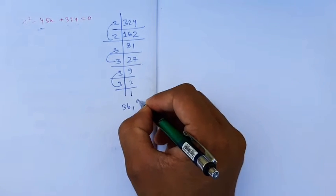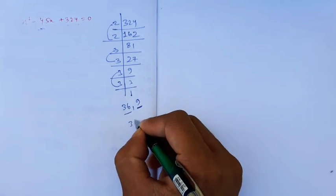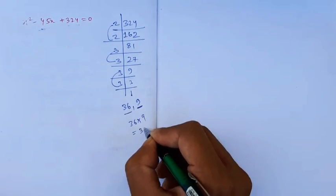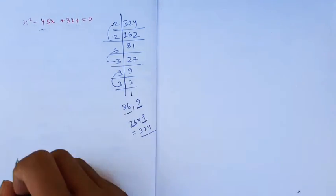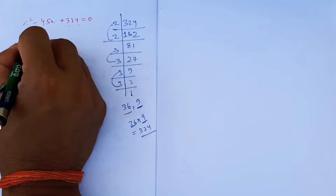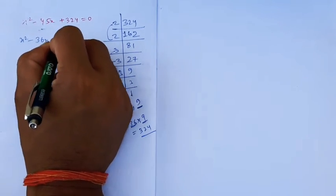And 36 + 9 = 45. So we can factor the equation as x² - 36x - 9x + 324 = 0.